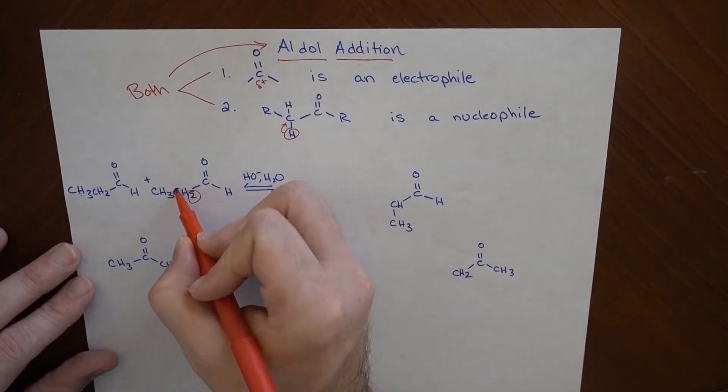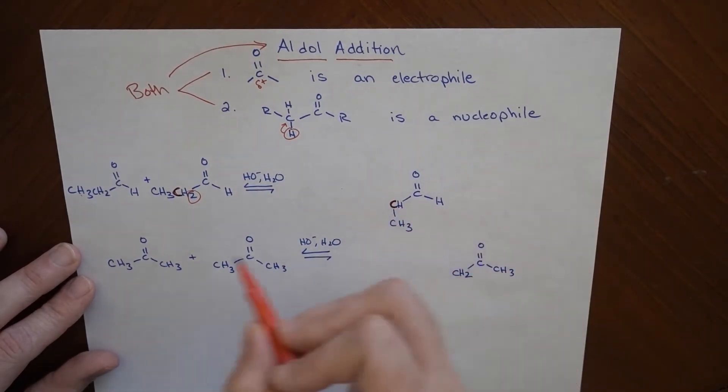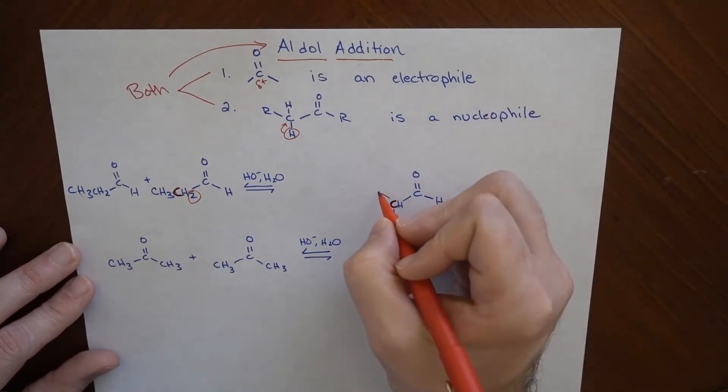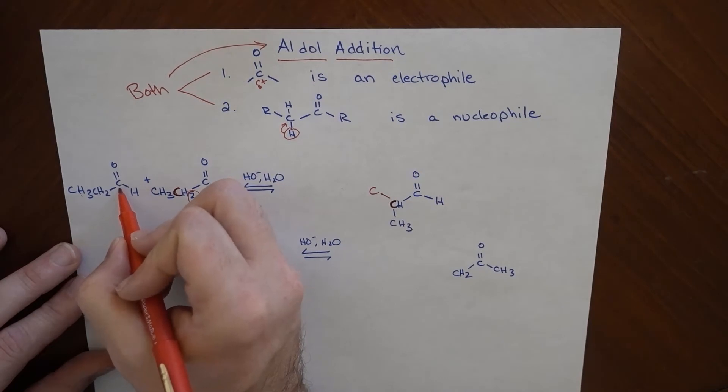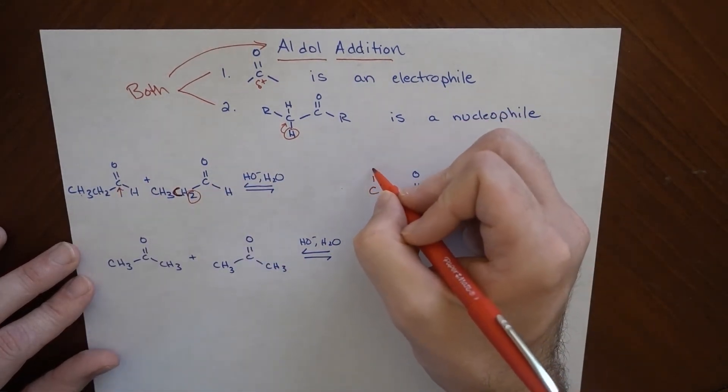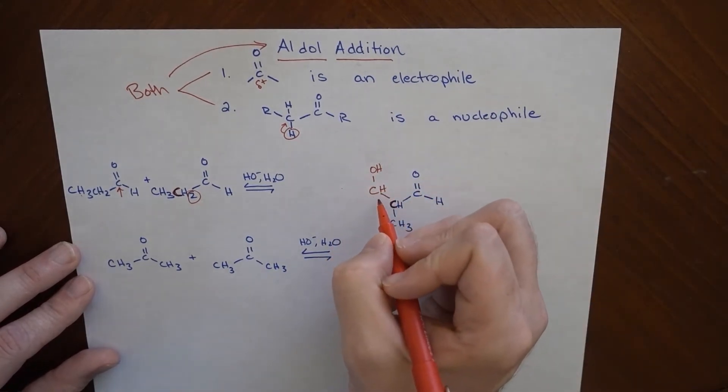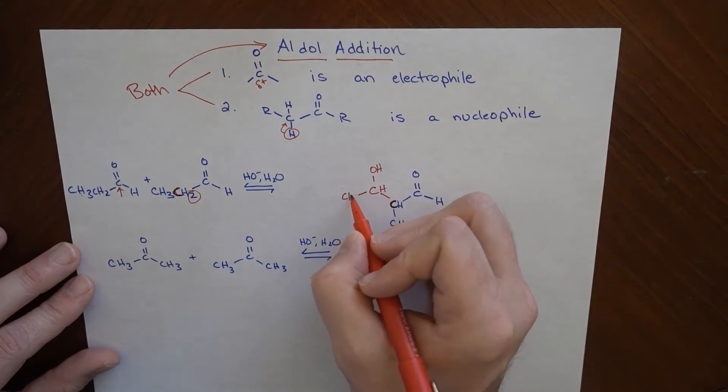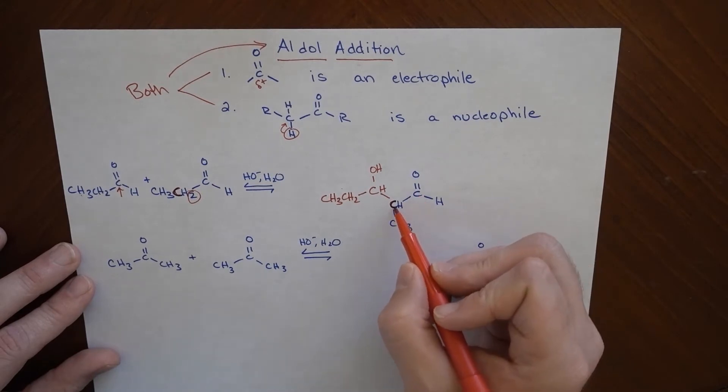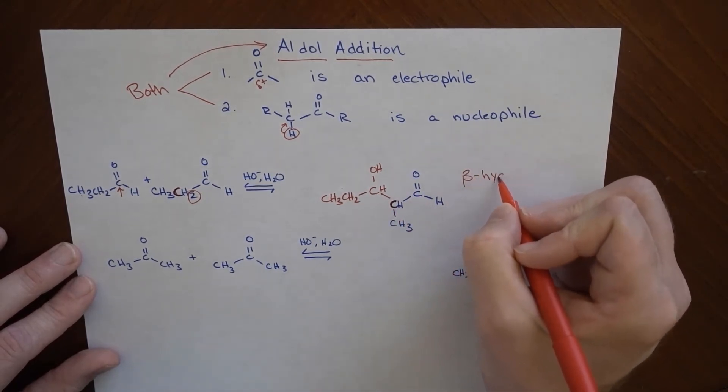So this carbon here is our alpha carbon, and it's the same carbon that's over here. So it has a CH3 attached to it, just like it does over here. It is going to attach to this carbon right here, and that carbonyl becomes an OH. It still has an H attached to it, and then everything else that was attached to it stays attached to it. So CH2, CH3. And this is what's known as a beta-hydroxy aldehyde.